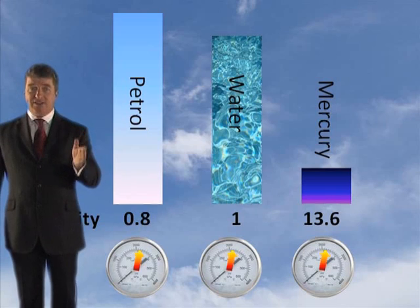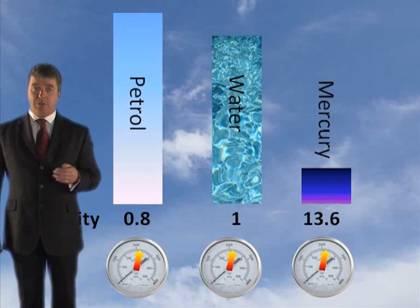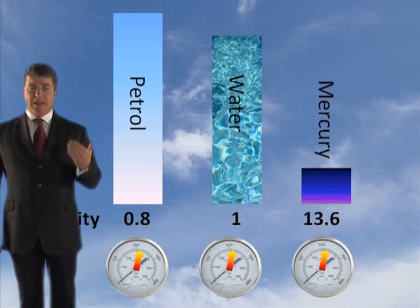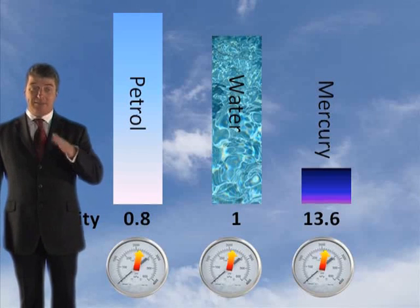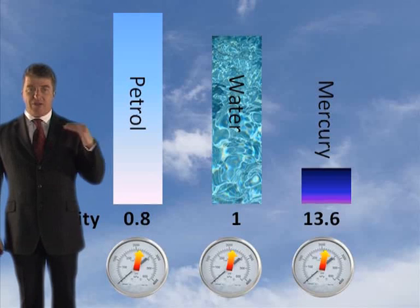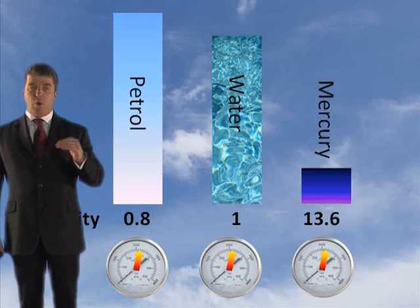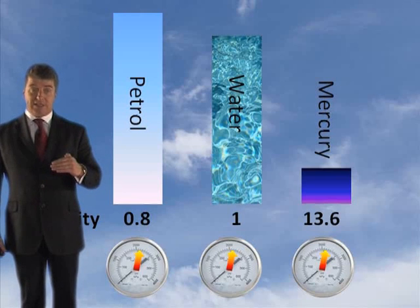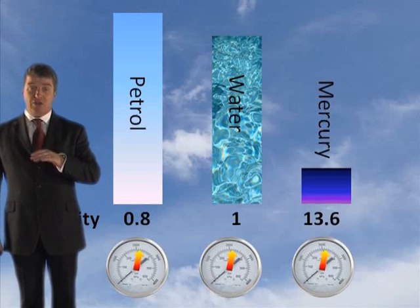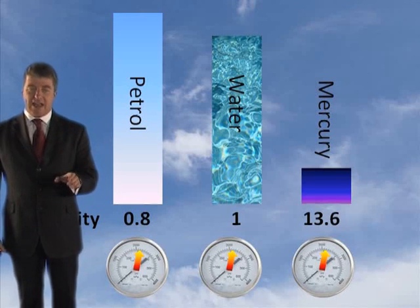Pressure is also proportional to the density of the substance. The higher the density, the greater the pressure will be. As shown here, the pressure at the base will be the same across three columns: mercury is 13.6 times denser than water, and petrol is 0.8 times denser. So the pressure on those three gauges will be the same, even though the column of water is 13.6 times higher — because water is 13.6 times less dense than mercury.